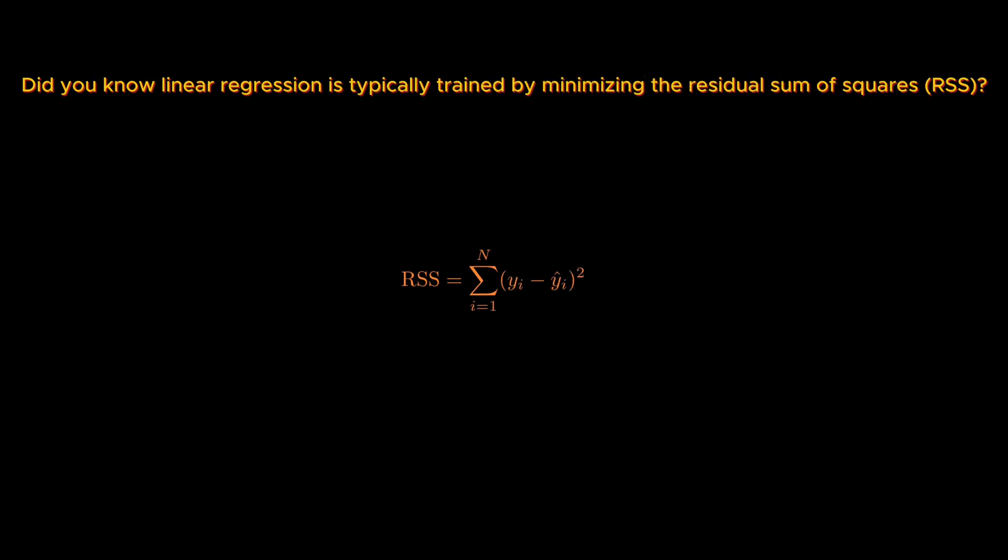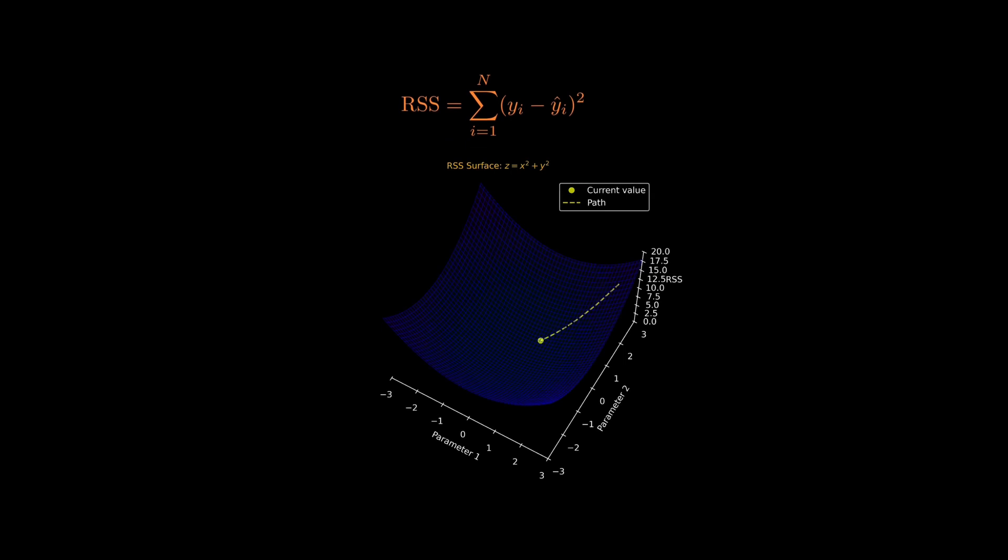Did you know that the standard way we train linear regression in machine learning is by minimizing something called the Residual Sum of Squares or RSS for short? Here's what that means.